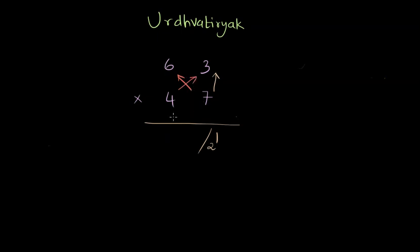So 7 times 6 is 42 and 4 times 3 is 12. The result is going to be 54, but again, we just write 4 and write a small 5, which will be carry for the next result. The next result comes by performing Urdhva or vertical multiplication of the leftmost digits, which is 6 and 4.